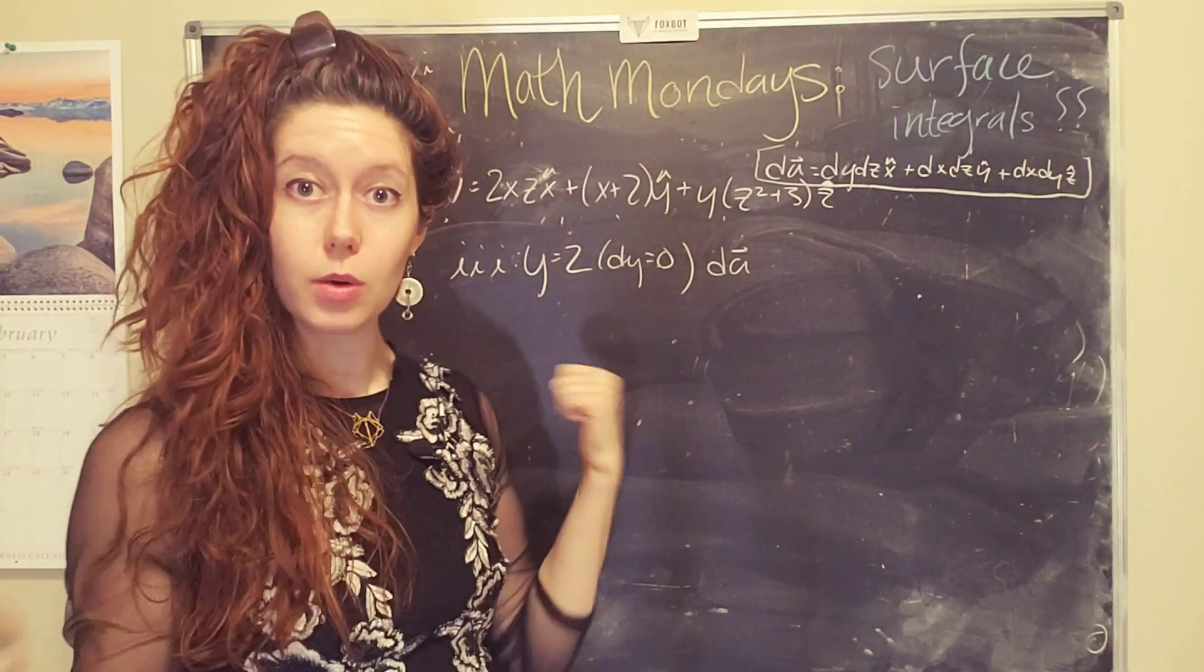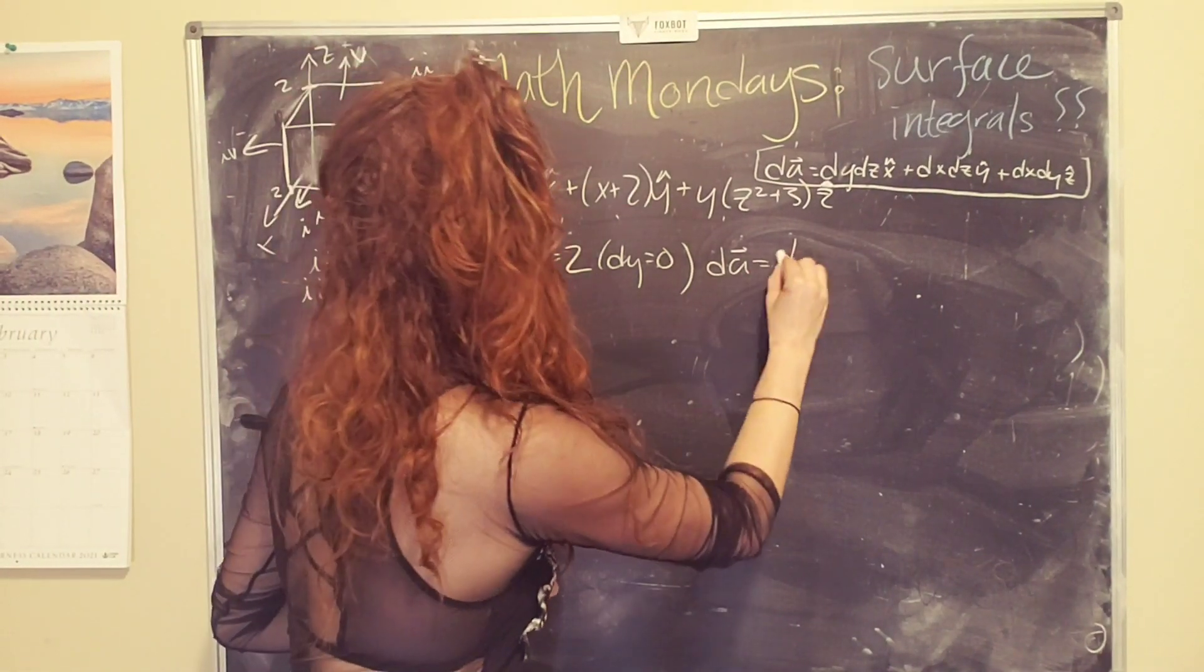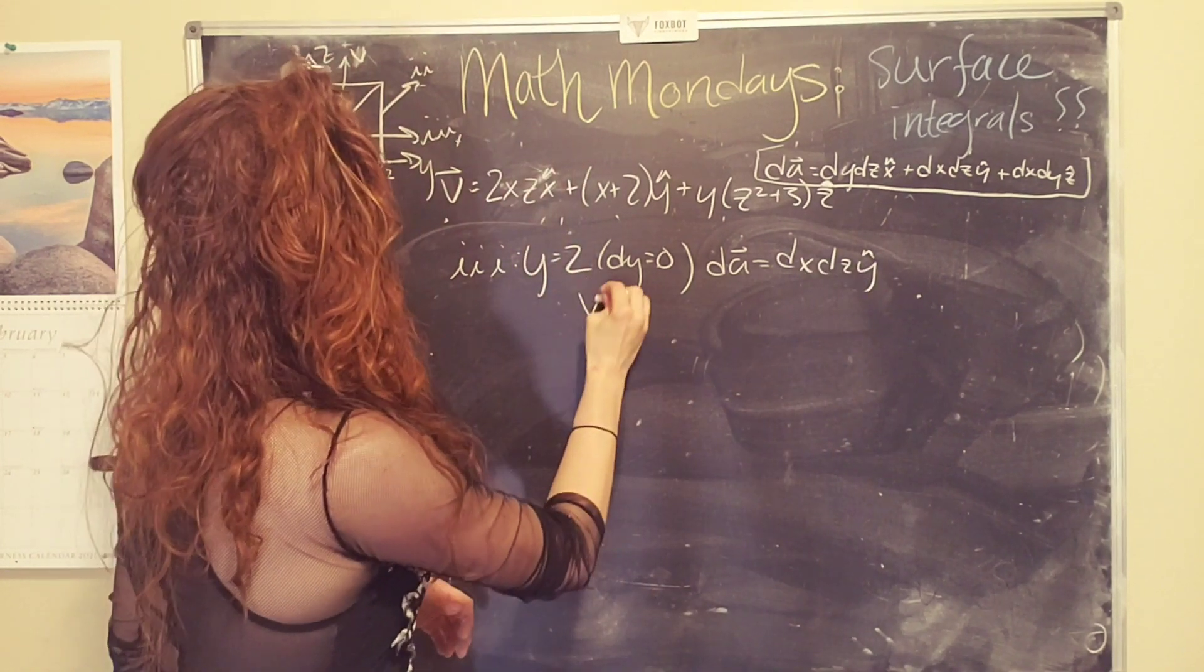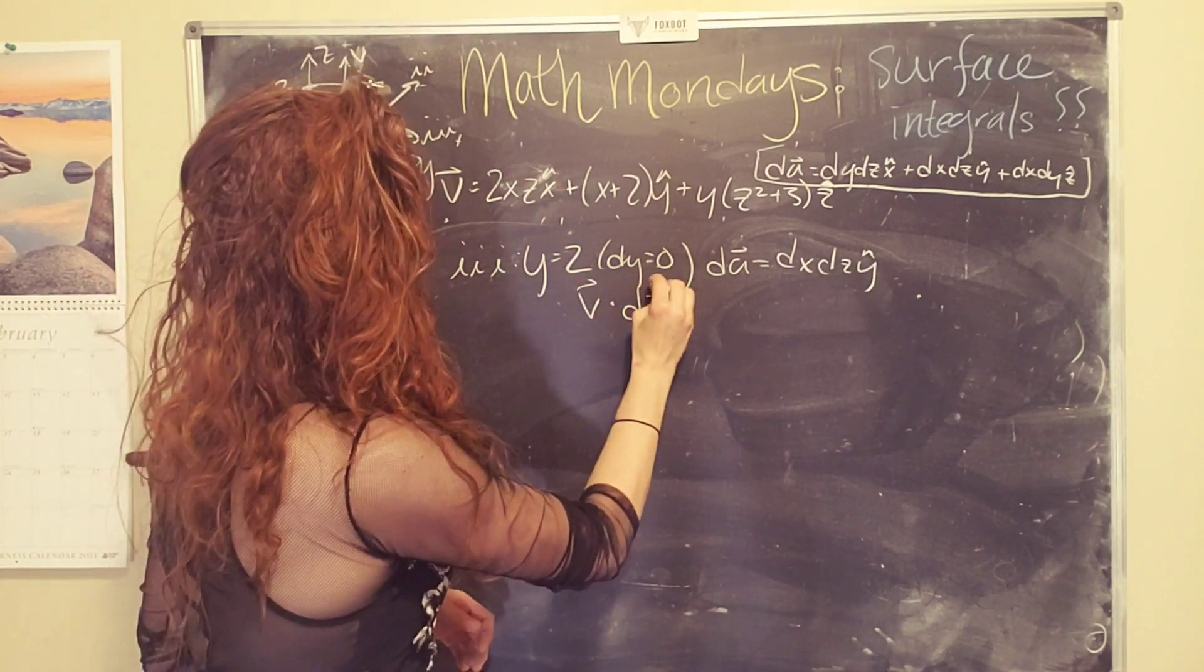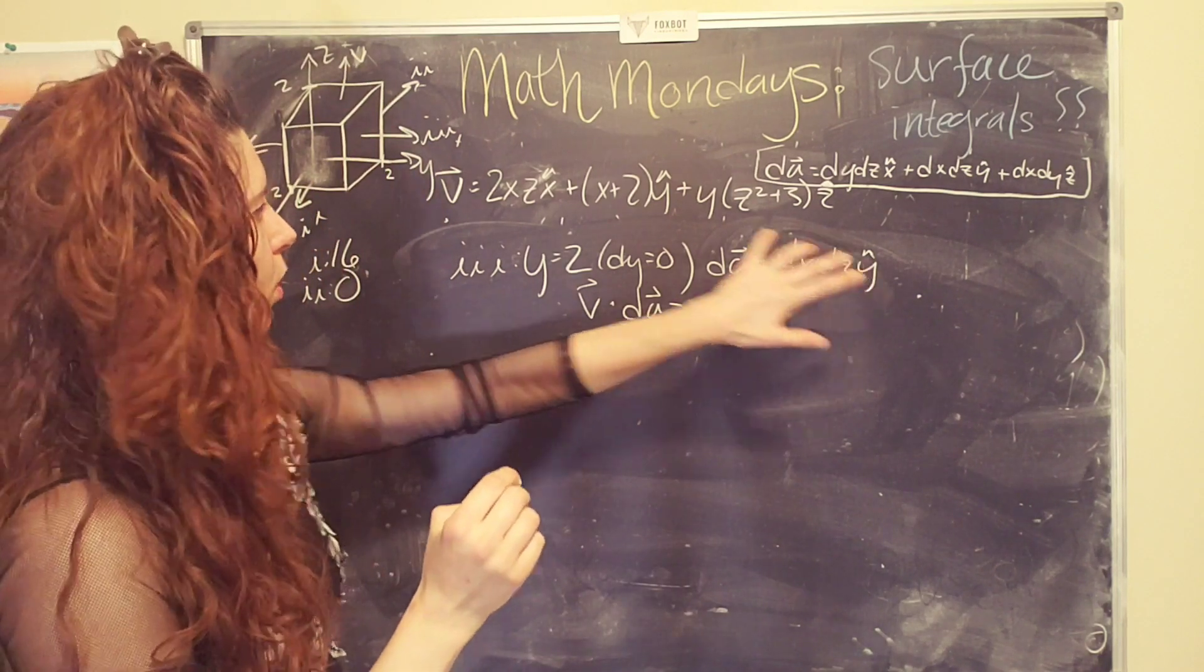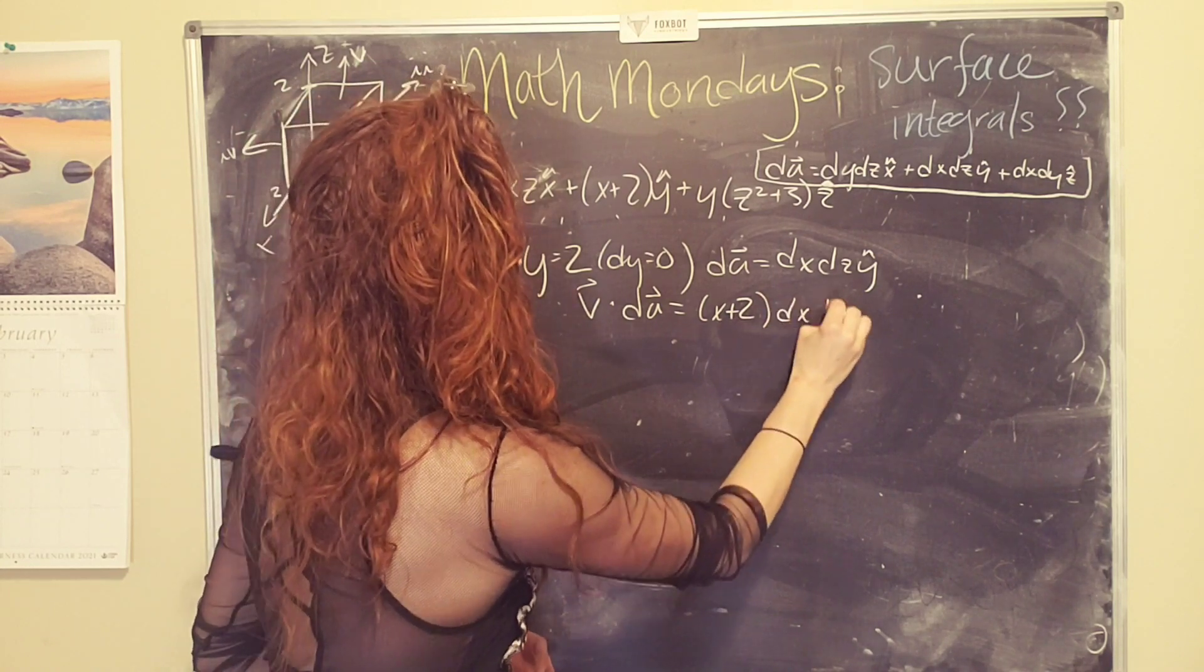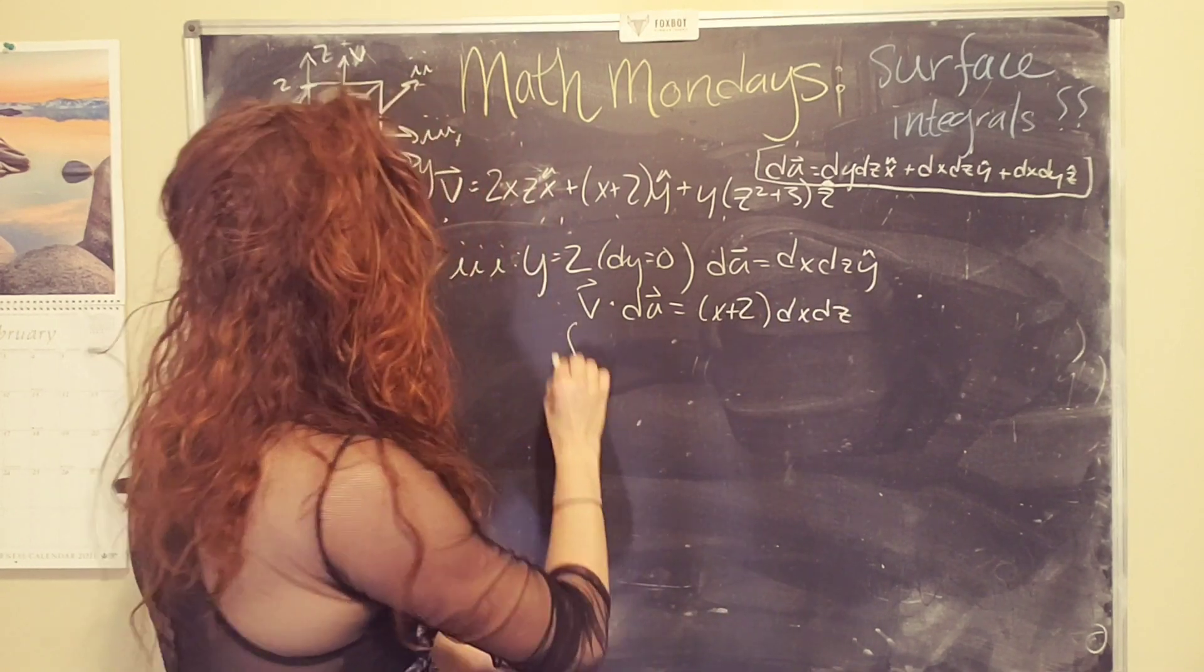And dA, all of the dy components are going to go to zero, zero, zero, zero, zero. We're just left with the y hat direction. So we have dx dz y hat. V dot dA, is going to pull out the y components. So we're going to get (x + 2) dx dz.